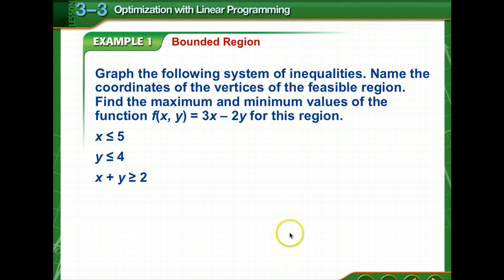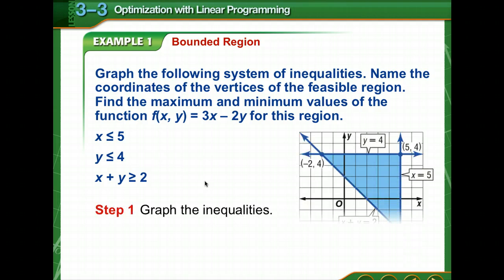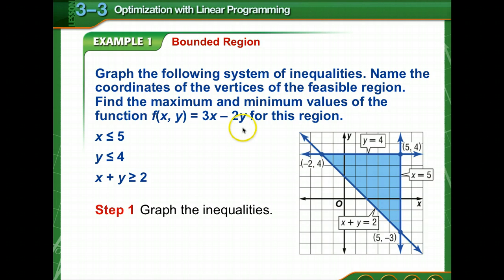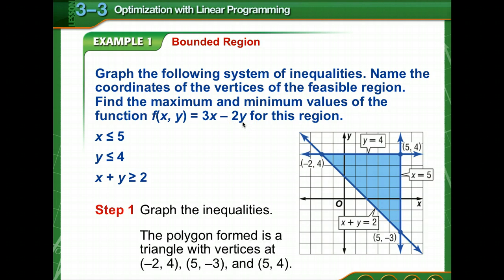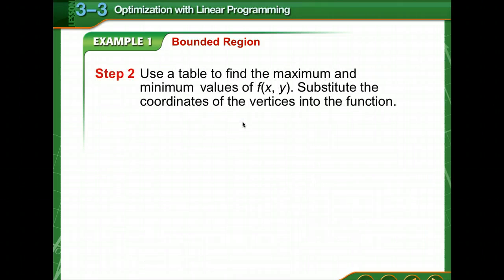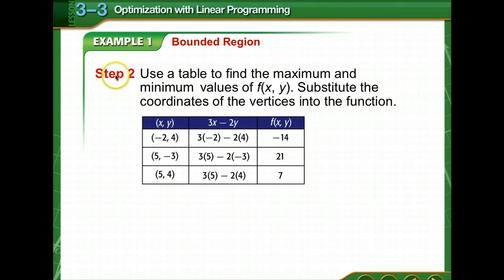To see what a bounded region would look like, we're to graph this system of inequalities. So after we've got them graphed, then we evaluate the function at each vertex. In order to do that, we use a table. So these are the vertices. The function that we were given was 3x minus 2y. And all we simply do is substitute in the x value and the y value into this function to see what might be the minimum or the maximum.